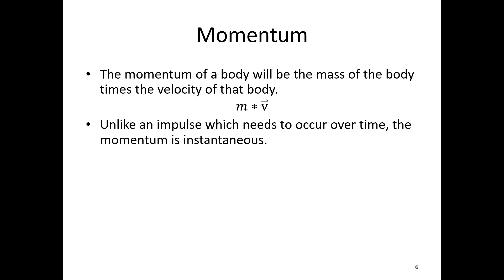And unlike an impulse, which needs to occur over time, momentum is instantaneous. So, this is going to mirror the work and energy methods, where we had work done over time and then an initial energy and a final energy. Here, we have an impulse done over time and a momentum initial and a momentum final, where the impulse happens between those two times.